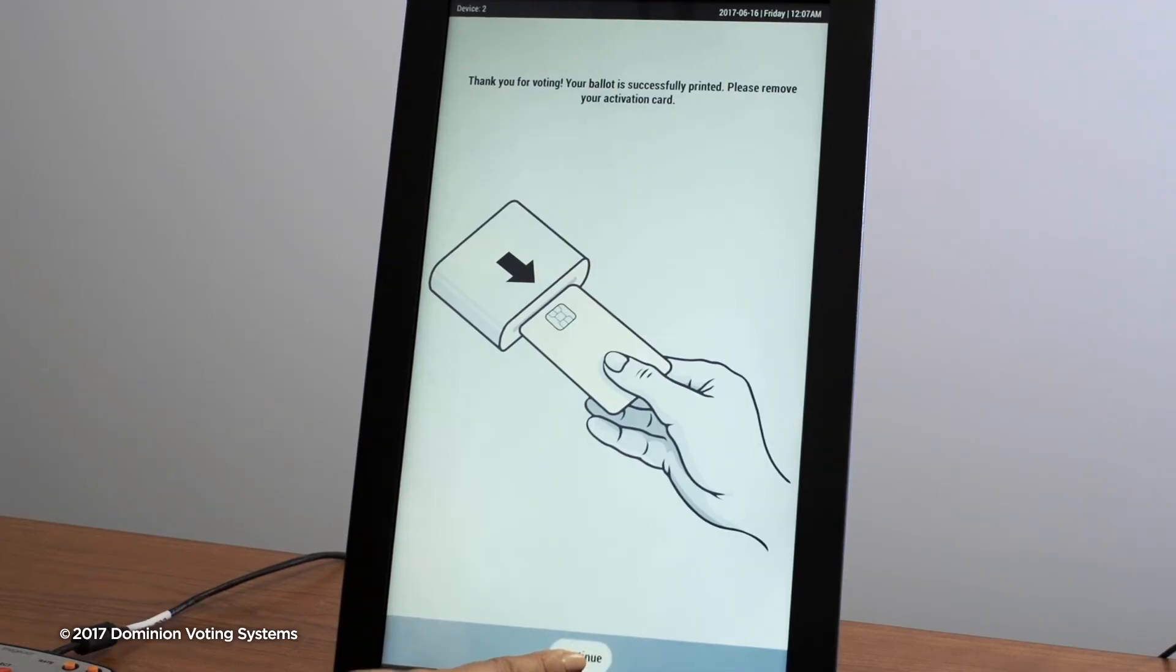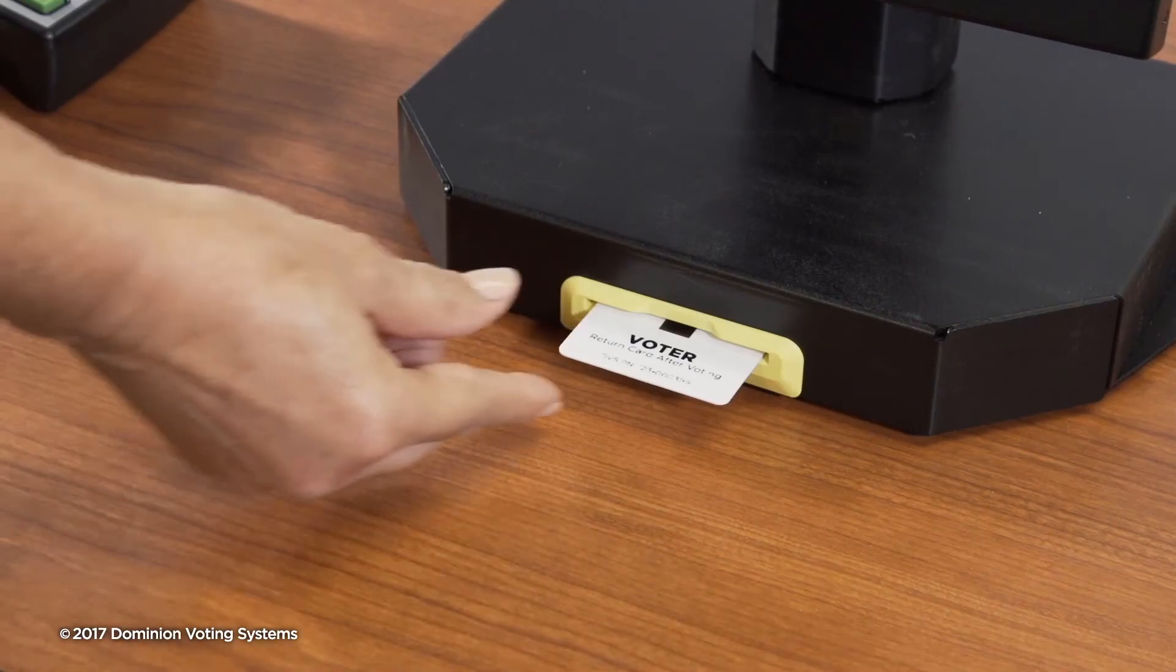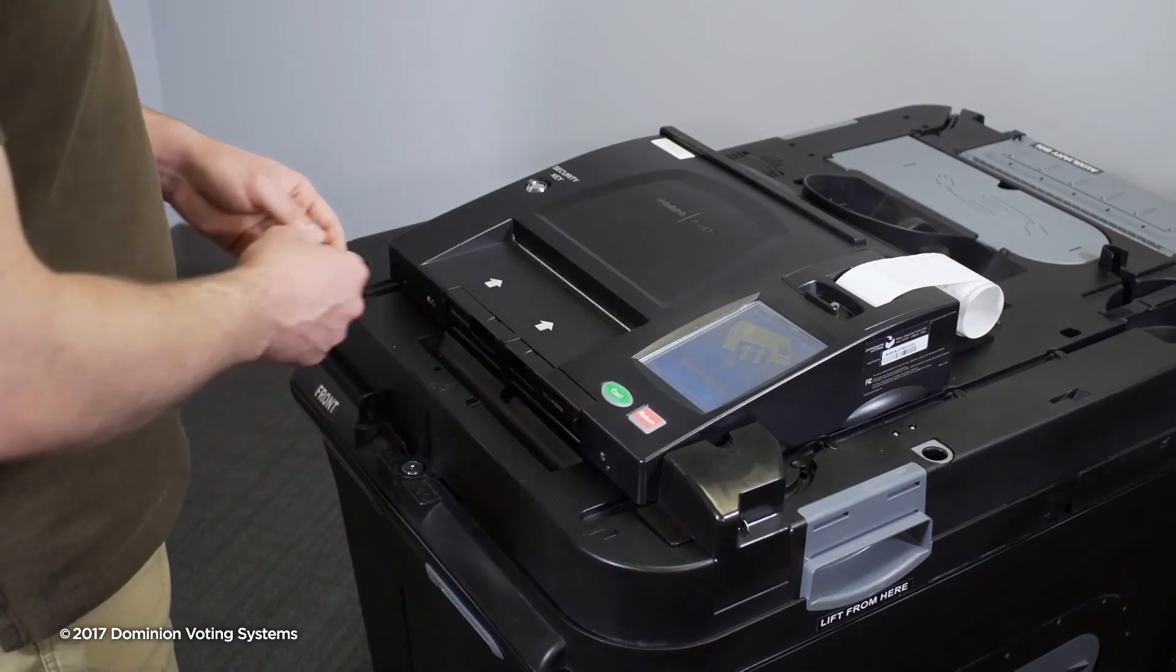Select Continue on the accessible device or in the ICX screen and remove the voter card. The voter will cast their ballot into the ICX tabulator.